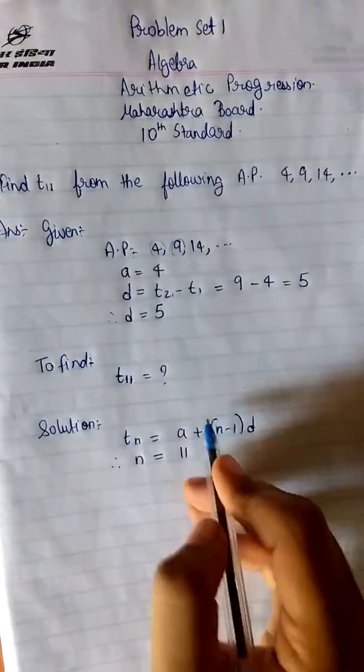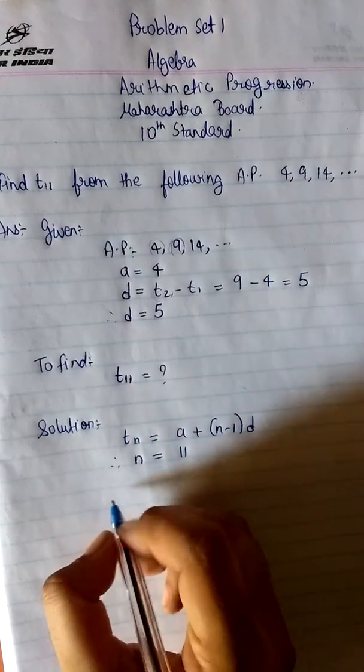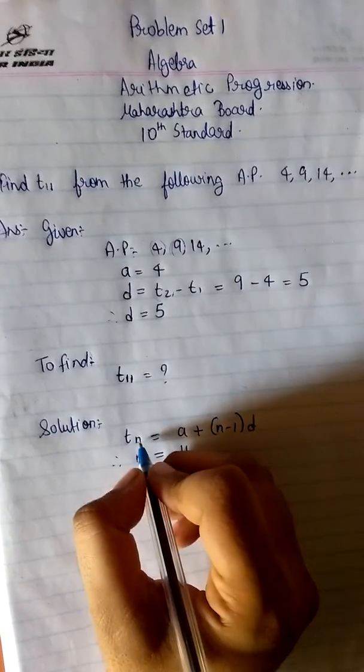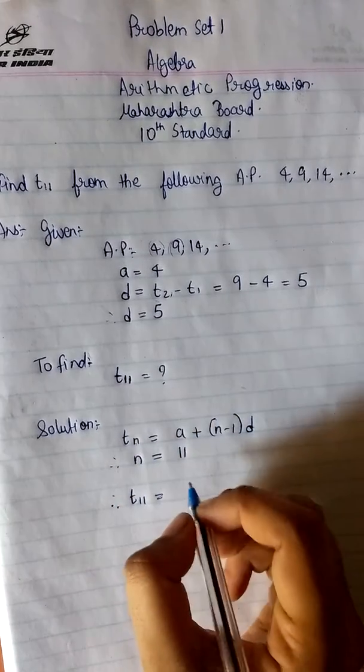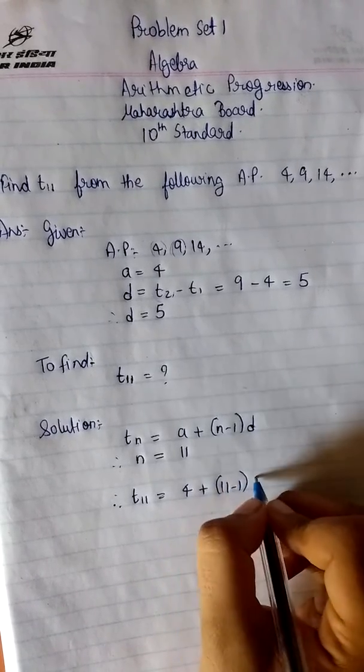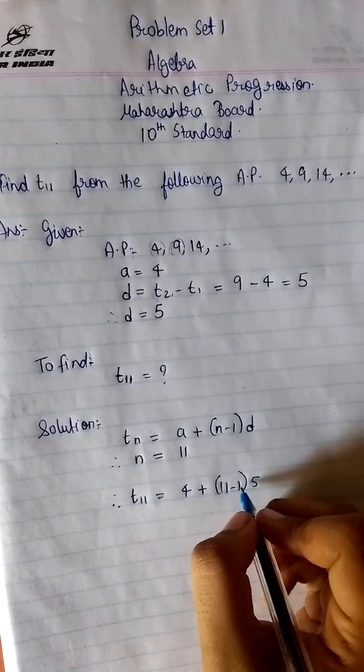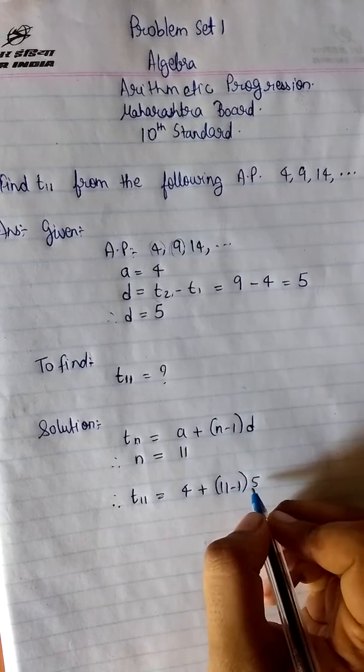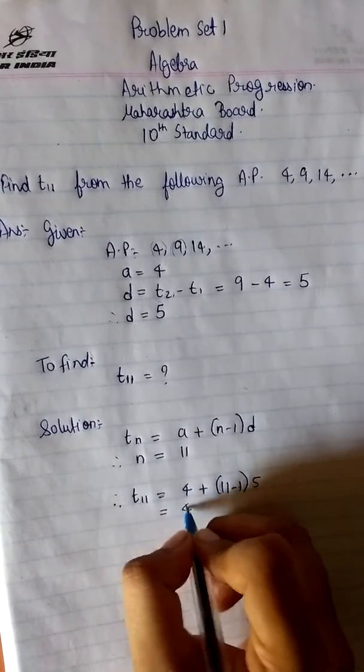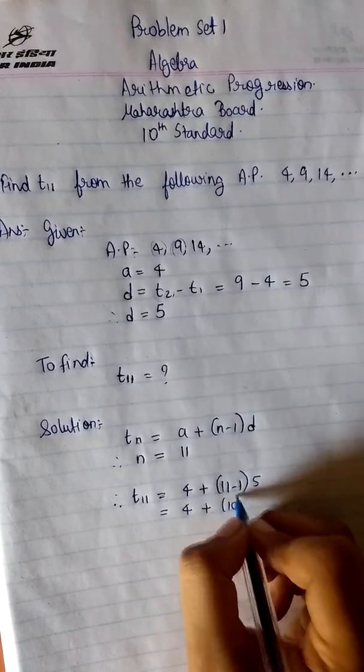All we have to do is substitute this value in the formula. Therefore we get T11 because in place of N I am writing 11. So T11 is equals to 4 plus 11 minus 1 into 5. Please note that the sign between these two numbers is multiplication.